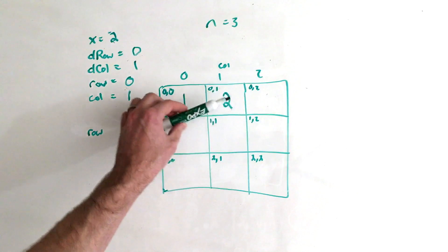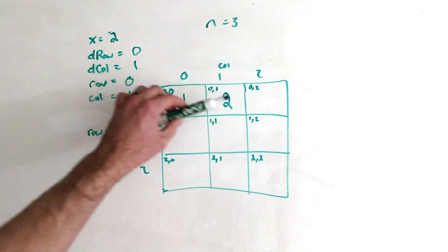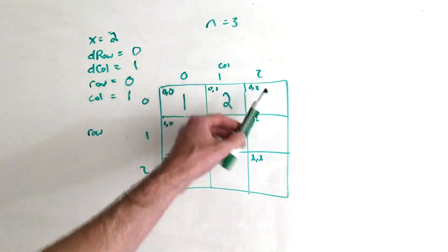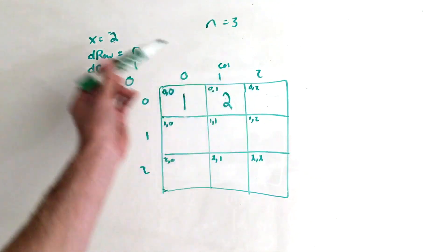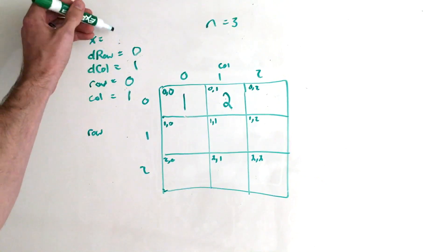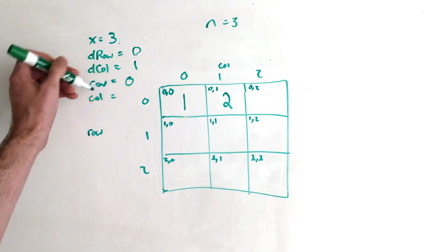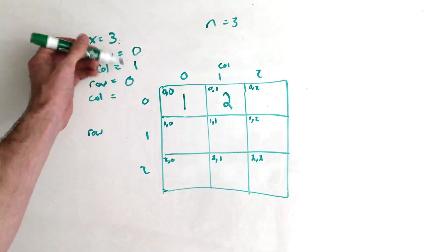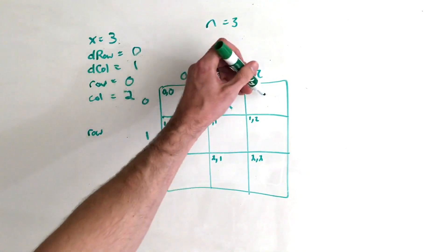All right, so now we just do that again, right? We check if we were to add dcolumn to column and drow to row, would that put us in bounds? And in fact, it would give us an element that hasn't been seen yet. So we can go ahead and do that same operation, where we increment x, we increment column by adding dcolumn to it. So now we're at 0, 2, and we can put a 3 there.